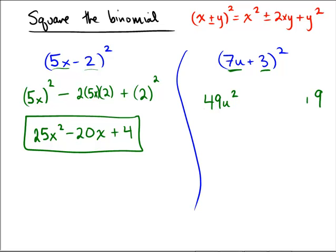The middle part is going to be plus and the last part is always plus. And the thing that goes in the middle is first one times second one, right? 7u times 3, which is 21u, and then double 21u. 21 doubled is 42. And there is the final answer. You see it saves valuable time sometimes.